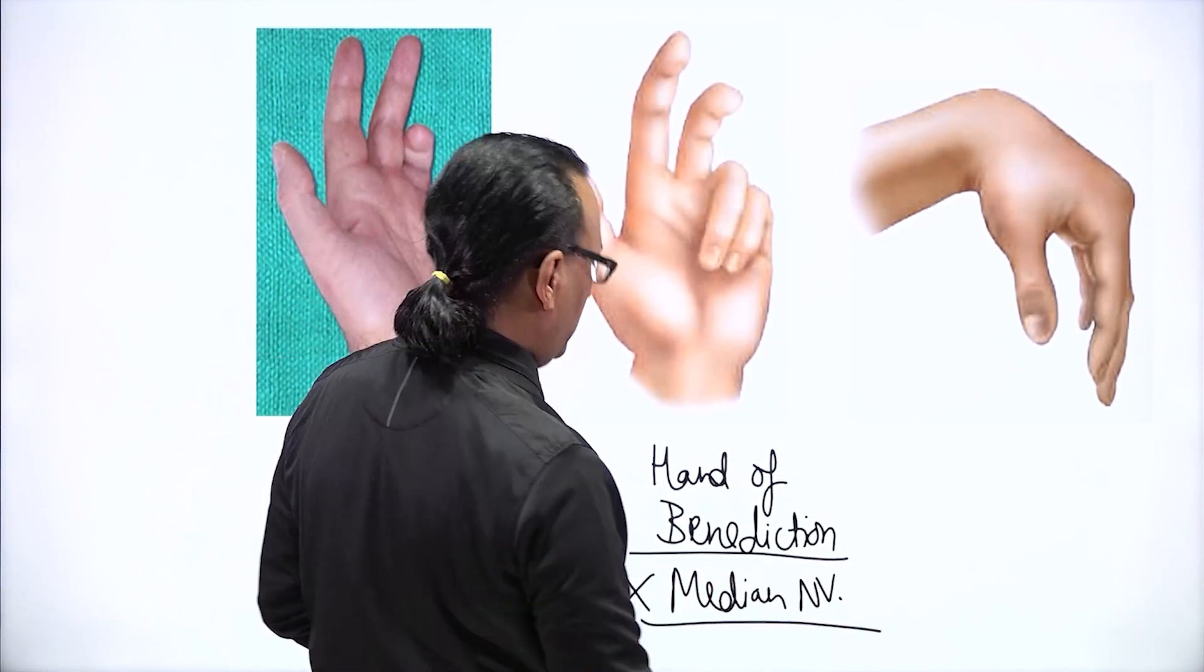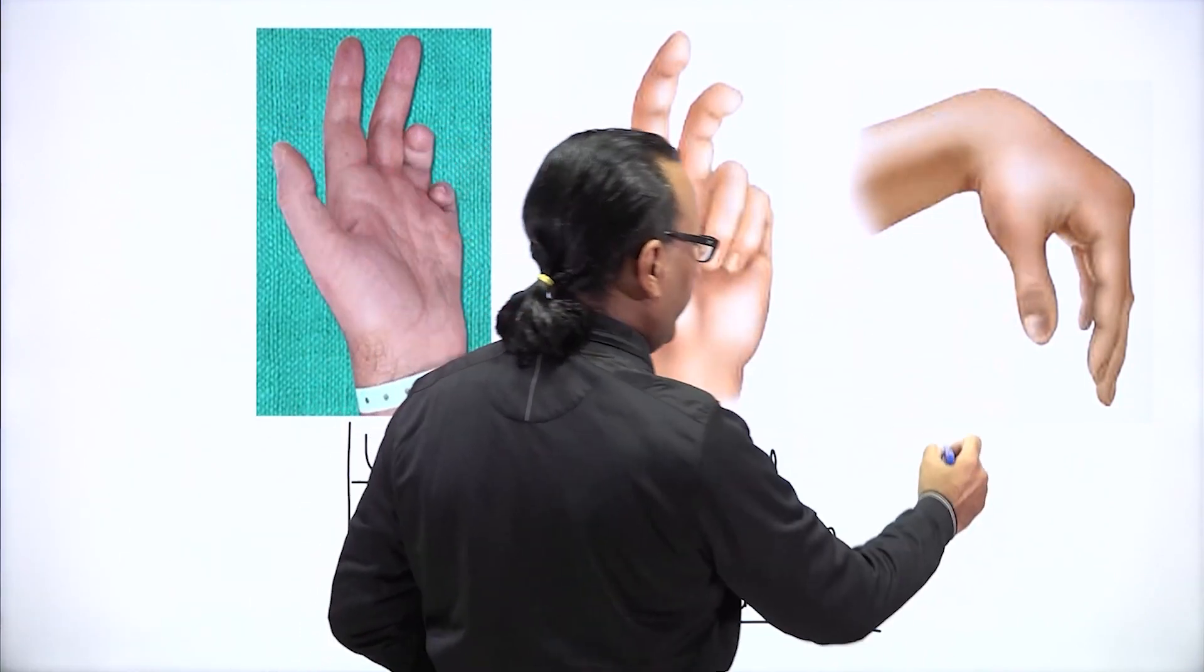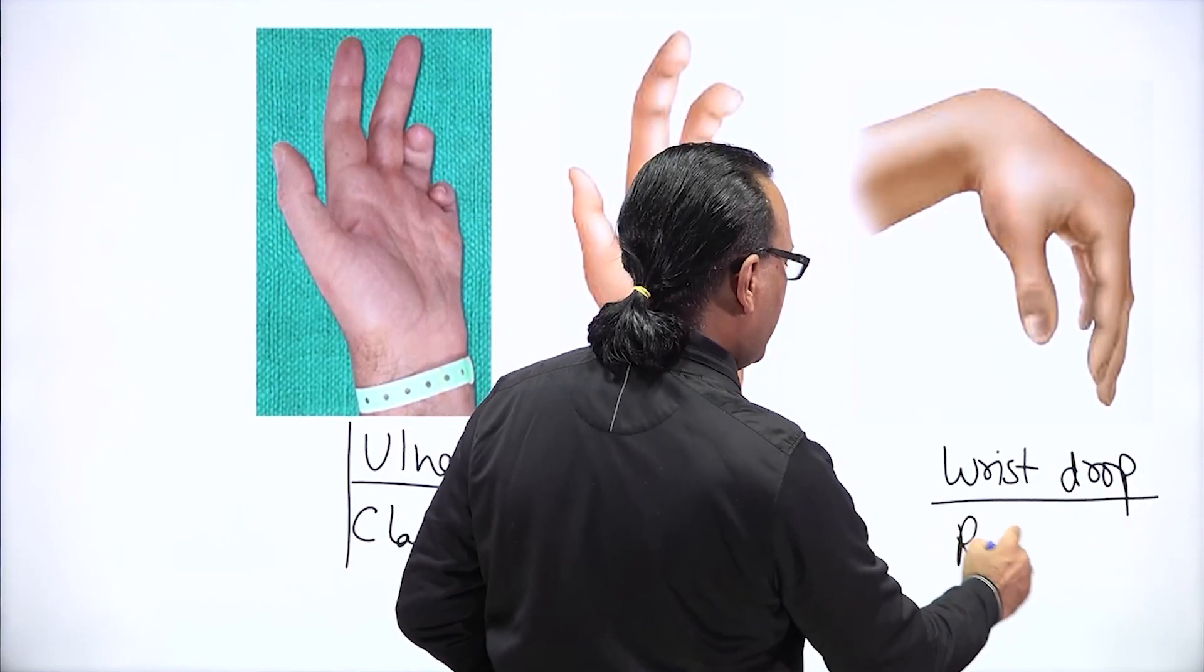And what about the third patient? The third patient is a case of loss of wrist extension, the wrist drop, and must be injury to the radial nerve.